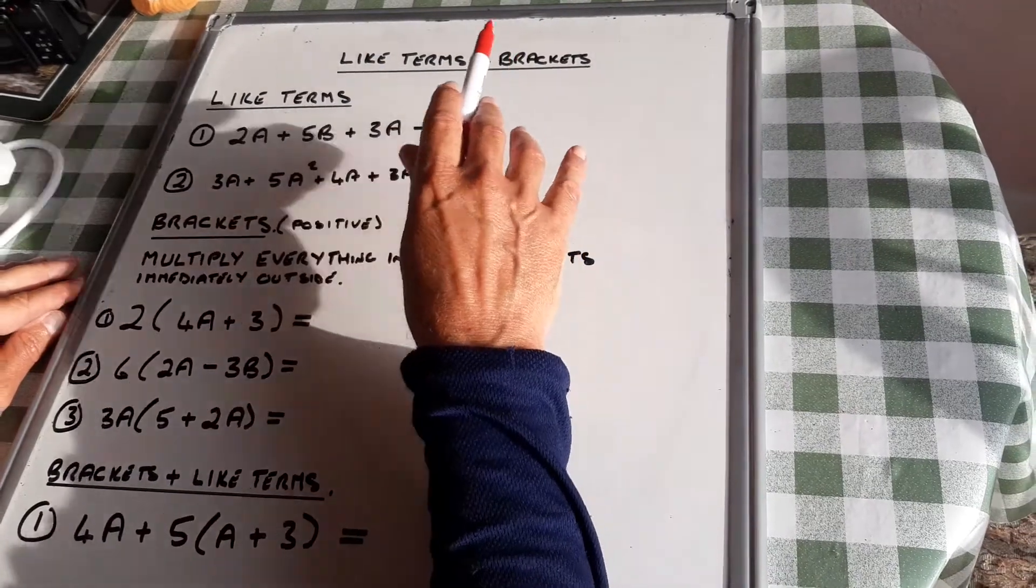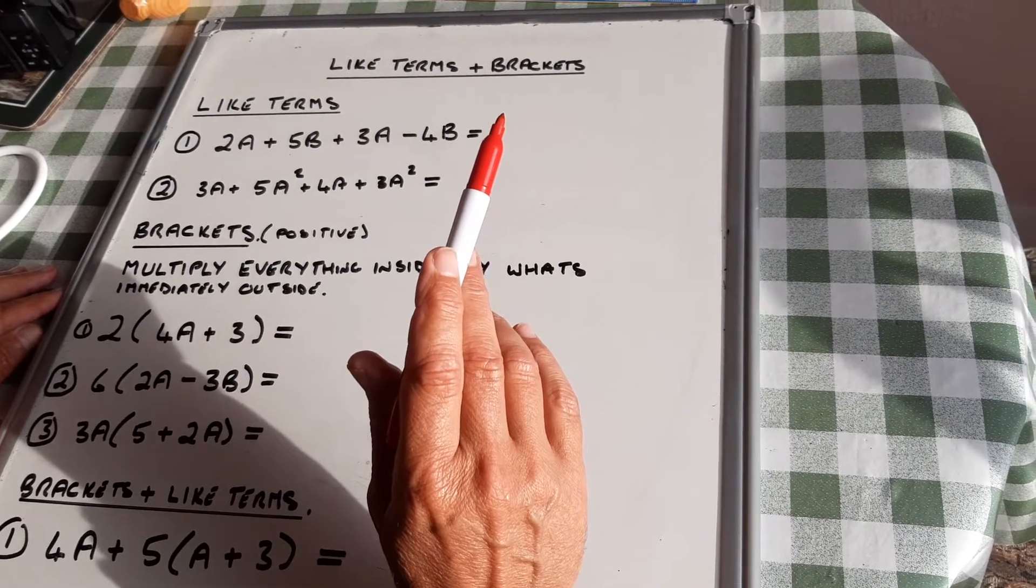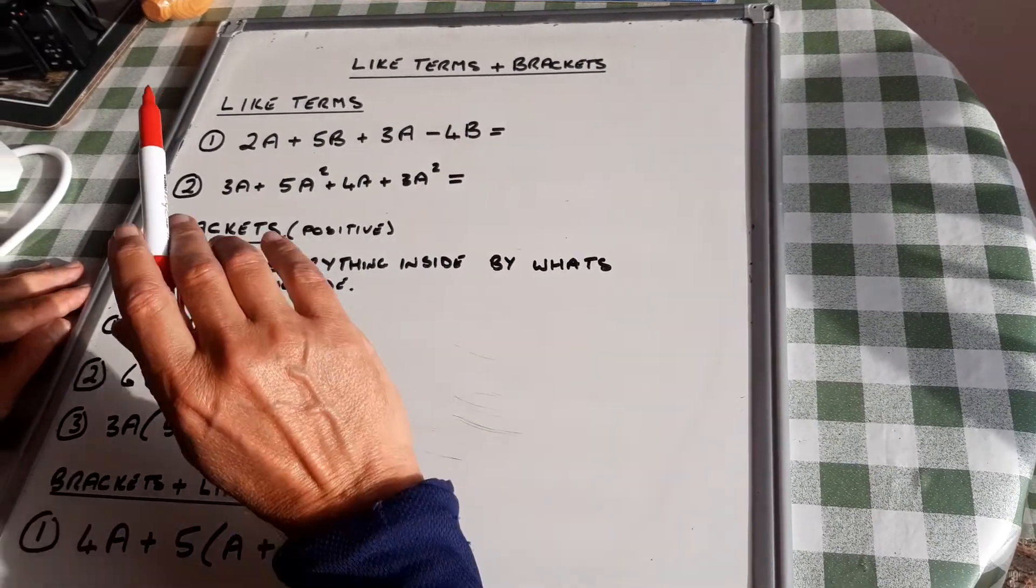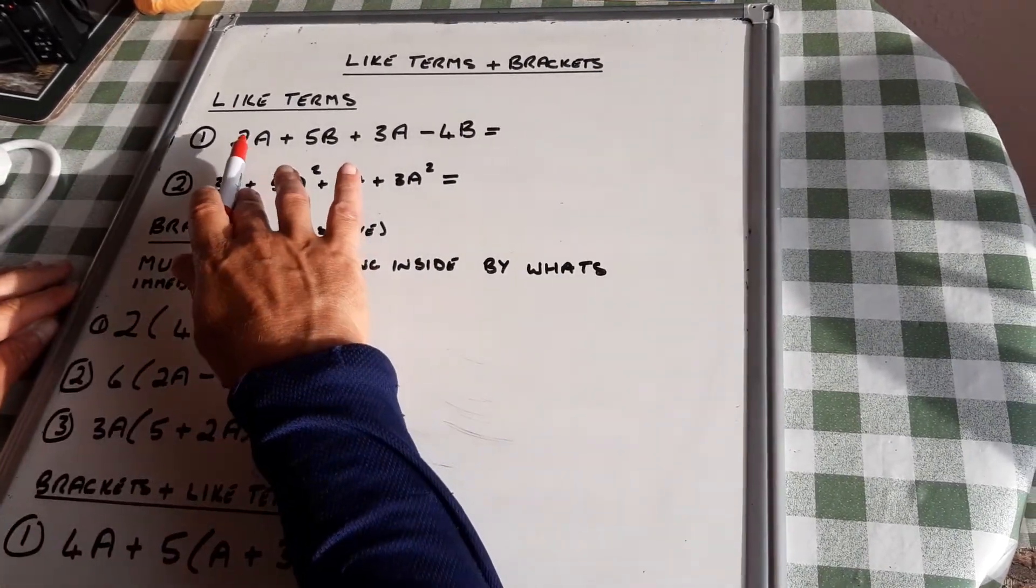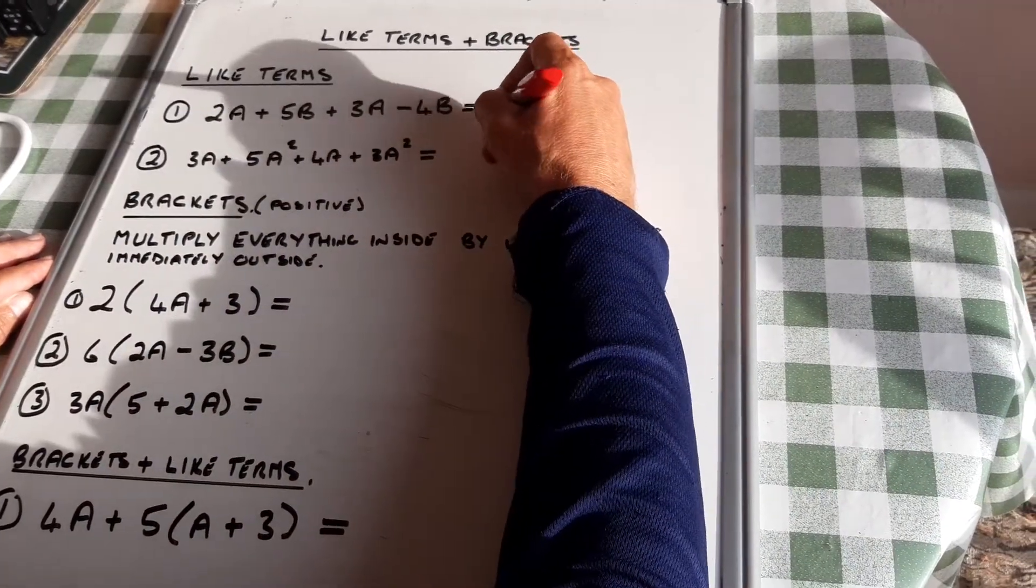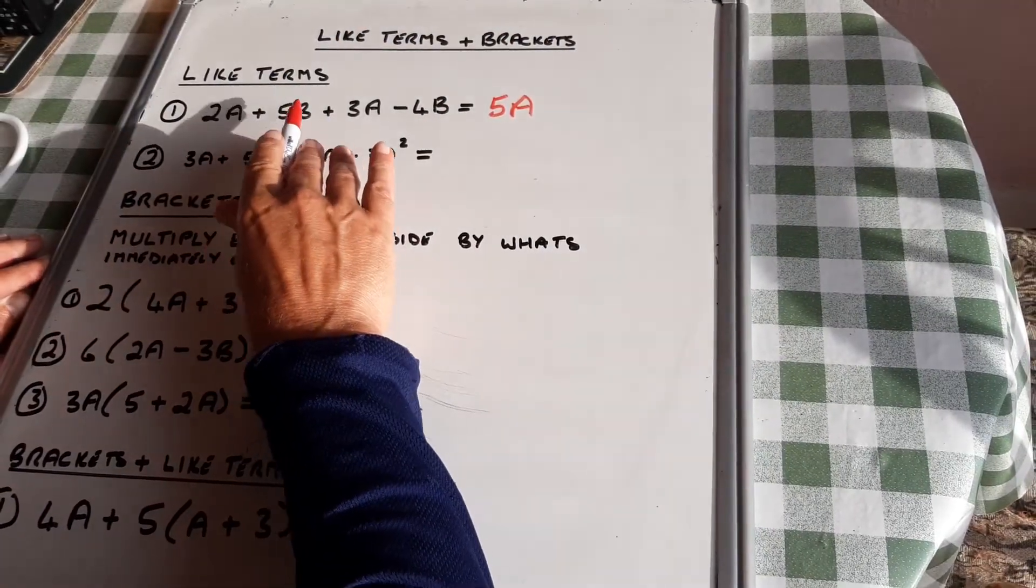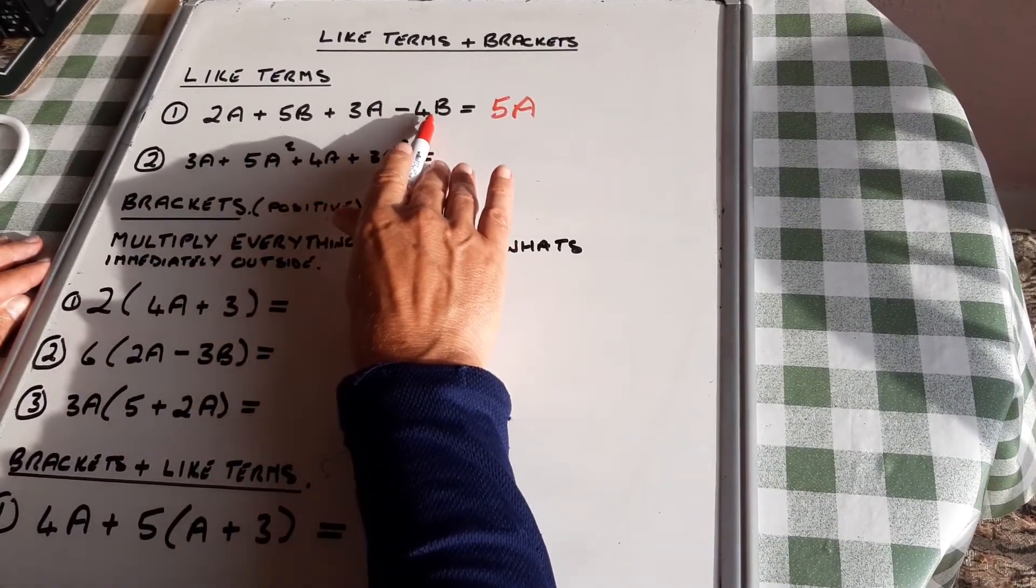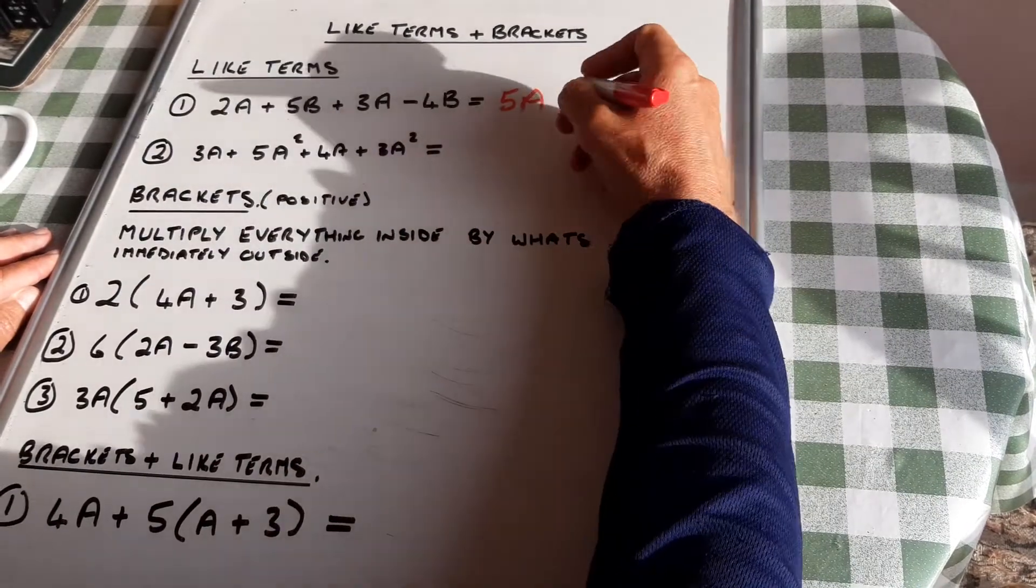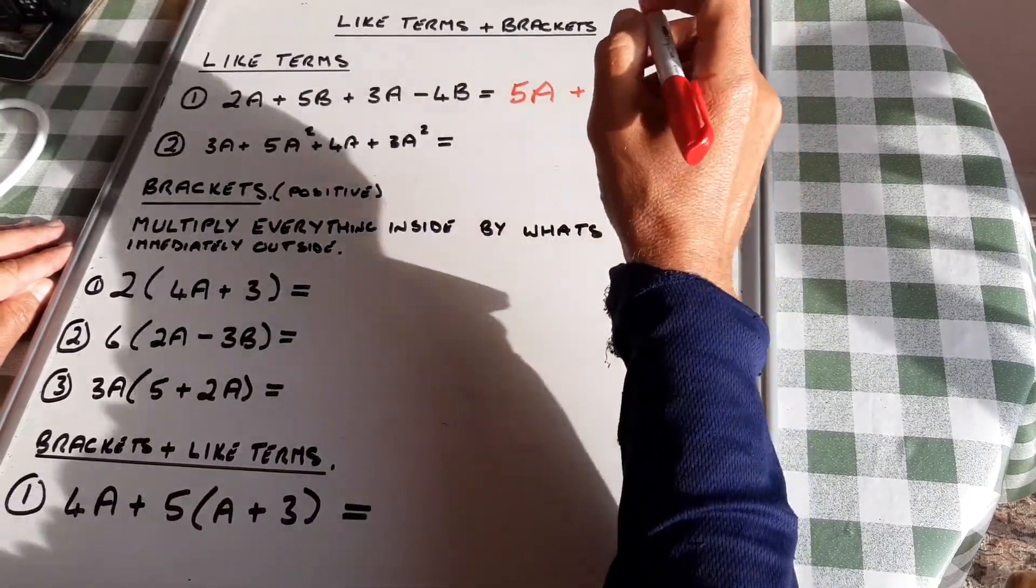Like terms and brackets - we are building on what we did last lesson. If you remember like terms, we had 2a add 5a is 5a, 5b minus 4b is 1b, or b on its own.